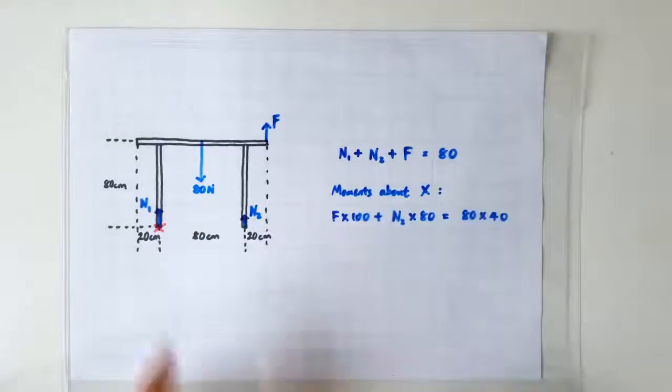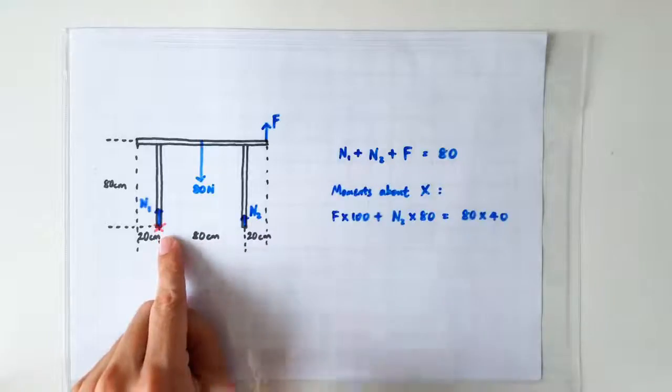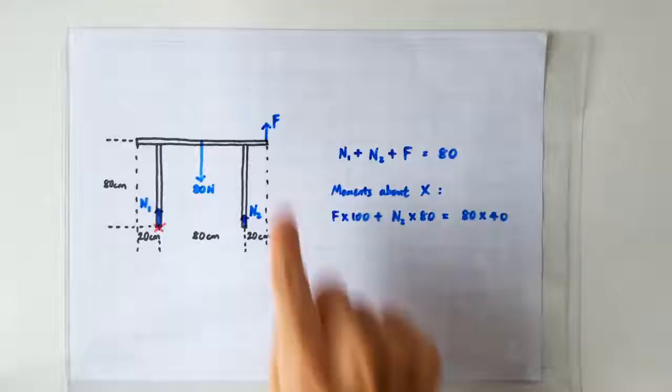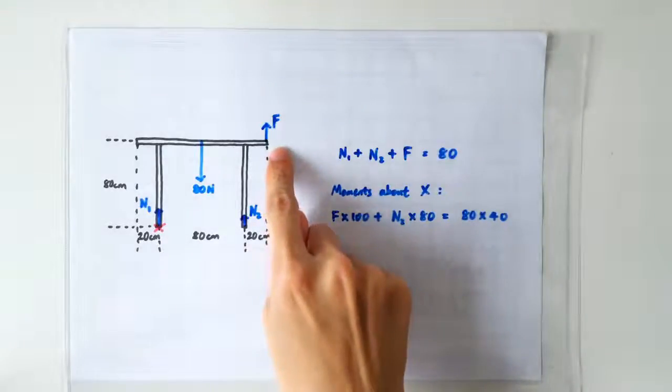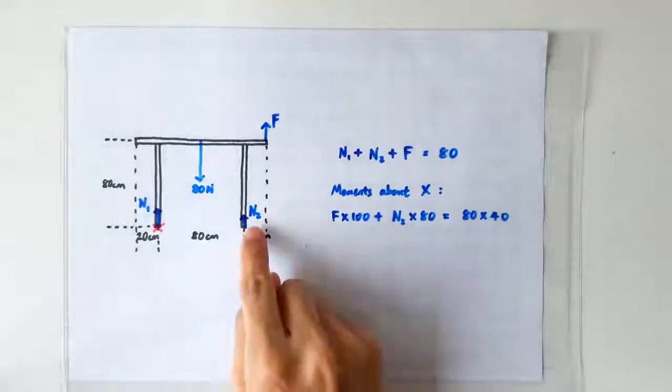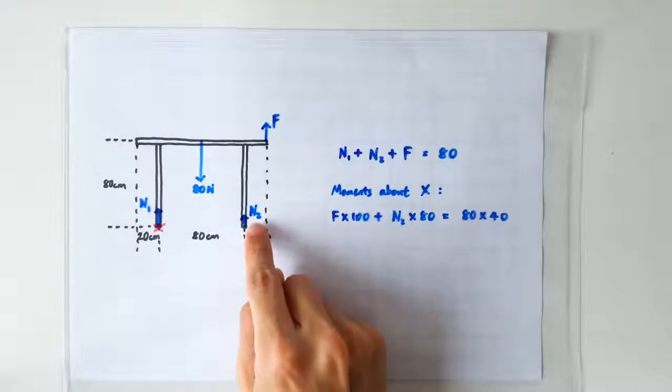Let's take moments about point X, which is the left leg of the table. We have the anti-clockwise moment by F, so F times 100 cm. And we have the anti-clockwise moment because of N2, so we have N2 times the 80 cm.